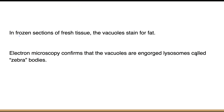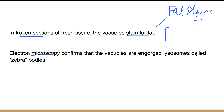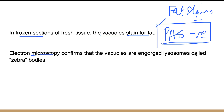In frozen sections, the vacuoles stain positive for fat because of the sphingomyelin content. If you do a PAS stain, it will be negative — this contrasts with Gaucher's disease where PAS is positive. In electron microscopy, you will see engorged lysosomes that appear as zebra bodies.